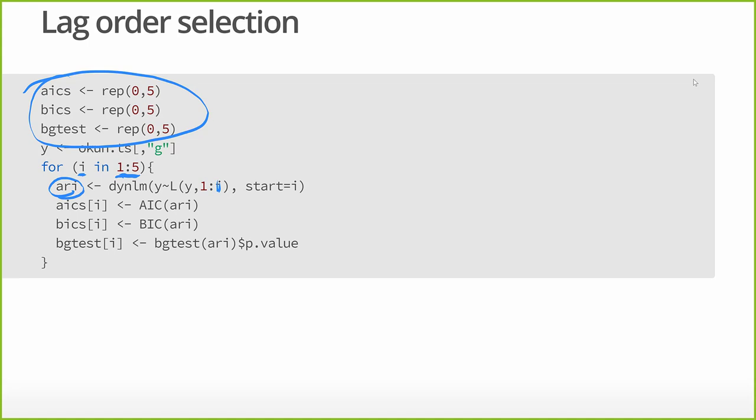And it's going to tell it to start at i, because if we don't start at i then we'll lose, we have missing observations. So that's what we're going to do. Then we're going to come down here and for the ith, we're going to put in the AIC, the BIC, and then we're going to get the test statistic from the BG test. Now the Breusch-Godfrey test is testing for serial correlation.